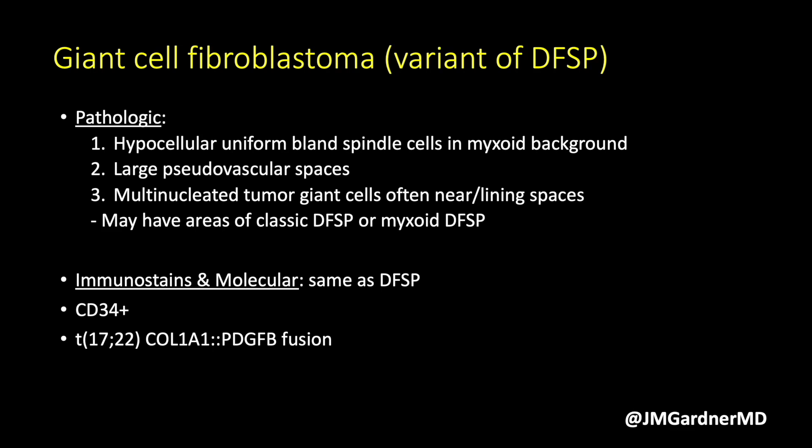Myxoid DFSPs I think have a lot of overlap with giant cell fibroblastoma, so if I see any cells that look like that I start thinking about myxoid DFSP. Remember, these are all DFSP regardless of what name you give them. You can do the fusion; I am not aware of a PDGFD fusion being described in this variant yet, but given that only about 25 or so PDGFD fusion DFSP cases have been reported, it is probably just a matter of time. We will stop there and come back for part two at the next lecture, starting with fibrous hamartoma of infancy.